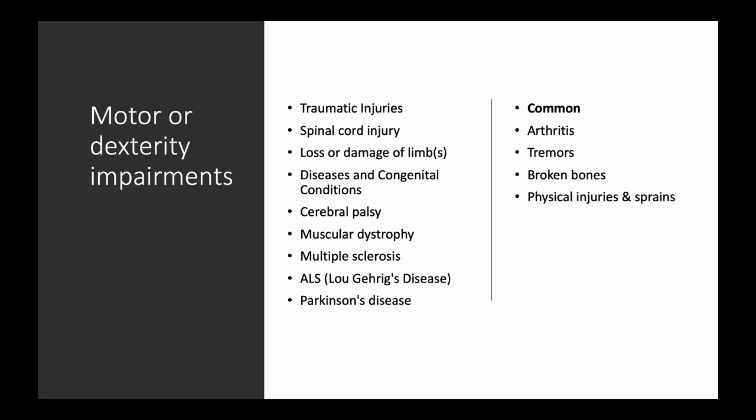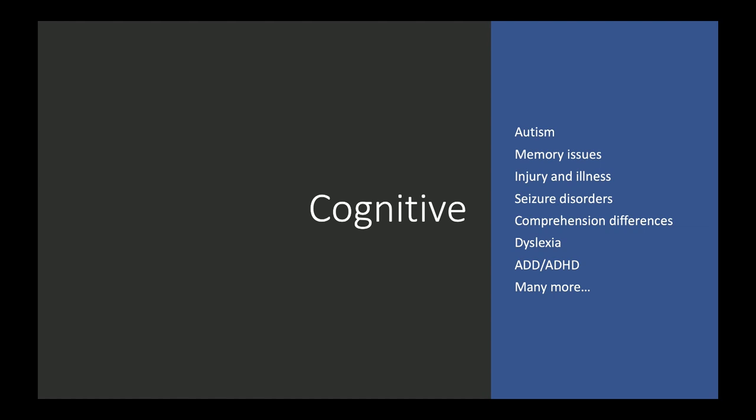Temporary conditions matter too: you'll break a bone, get a sprain, or develop a frozen shoulder at some point. That affects how you use technology. Make sure there's always alternative keyboard input, the tab order is not ridiculous, and avoid pop-ups and modal dialogues unless they're easy to dismiss with a nice big close button or by clicking away.